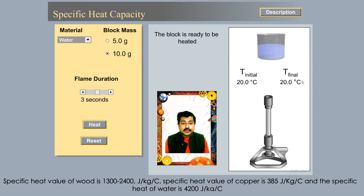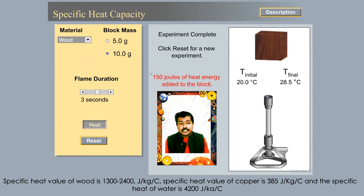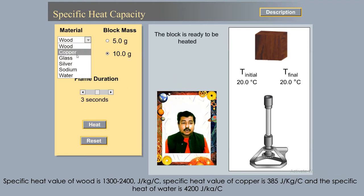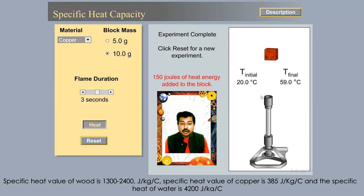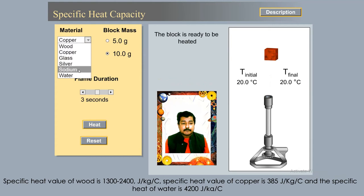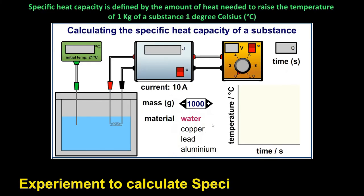Let's examine different materials and their specific heat capacities. Here we have a burner — let's select wood and start heating. When I provide 150 joules of heat energy to the block of wood, it raises to 28.5°C. Now let's reset and select copper — heating with the same 150 joules, the temperature reaches 59.0 degrees Celsius. Let's select water — heating water with 150 joules, it only reaches 23.6 degrees Celsius.